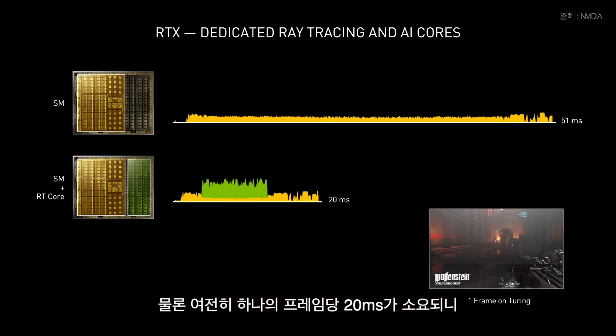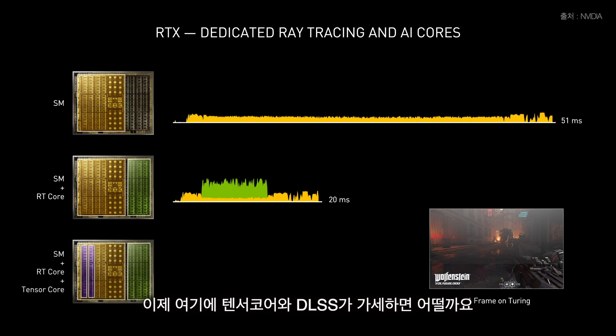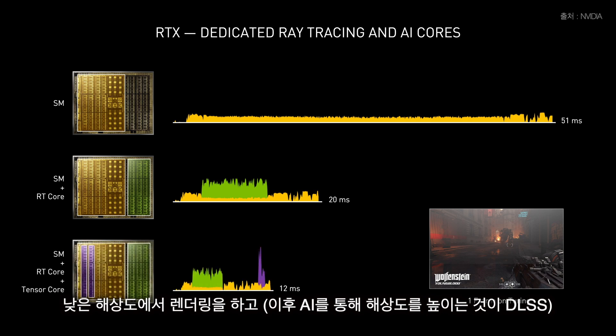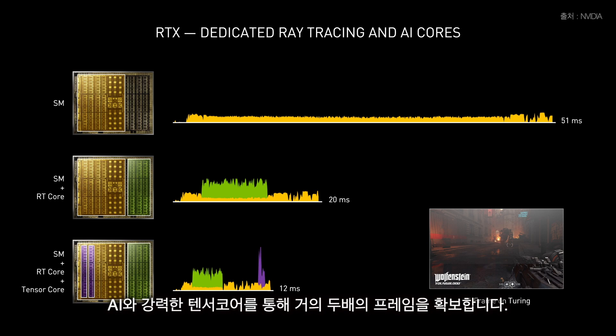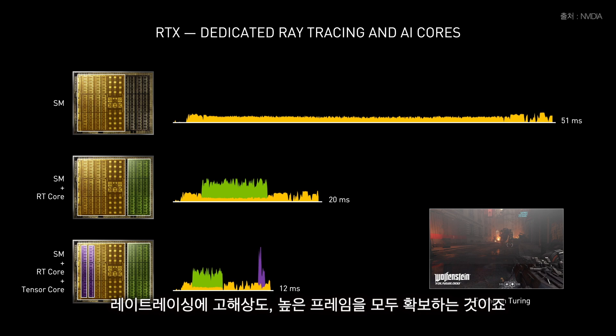Even then, 20 milliseconds is only 50 frames per second. This is where the Tensor Core and DLSS come in — rendering to a lower resolution, then using AI and the super-fast Tensor Core to effectively double frame rate. Now you can get ray tracing, high resolution, and high frame rate at the same time. That's the magic of the three processors of RTX.